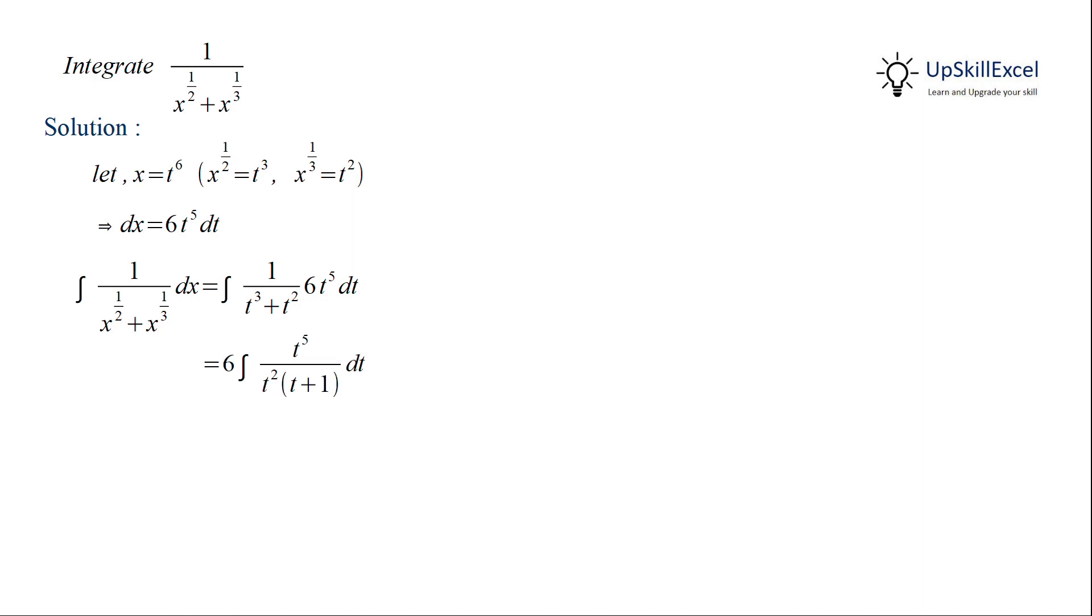Now t squared is common in both numerator and denominator so it gets cancelled out and gives us t cubed over t plus 1. Now the numerator has an order of 3 which is greater than the order of 1 in the denominator, so we can easily divide t cubed by t plus 1.